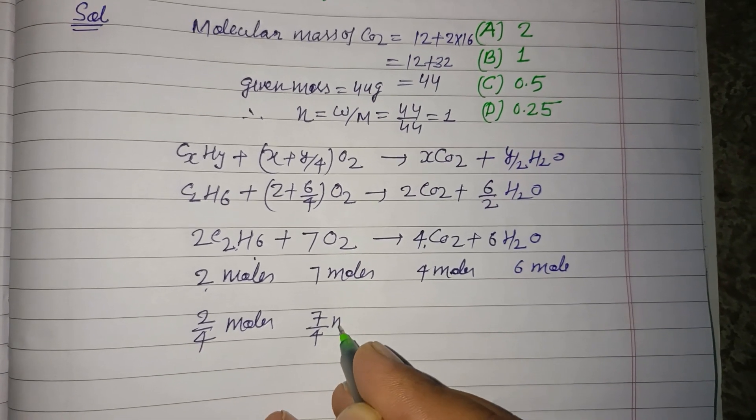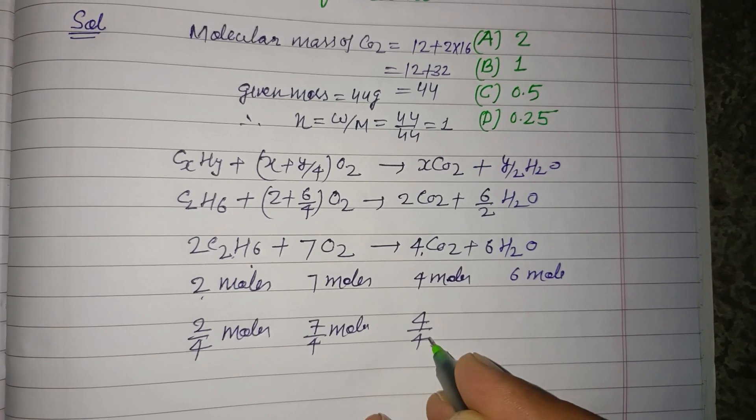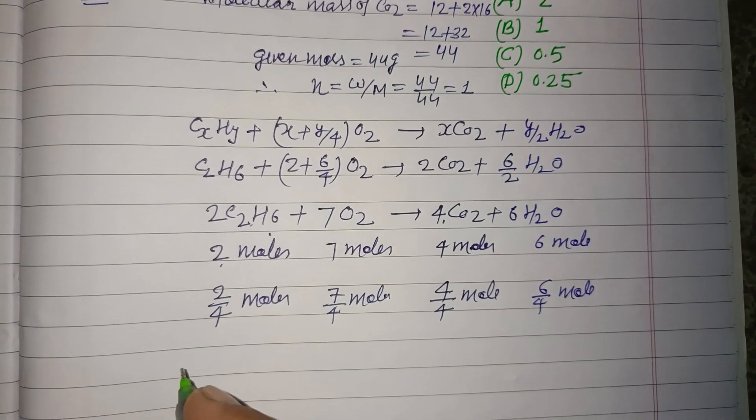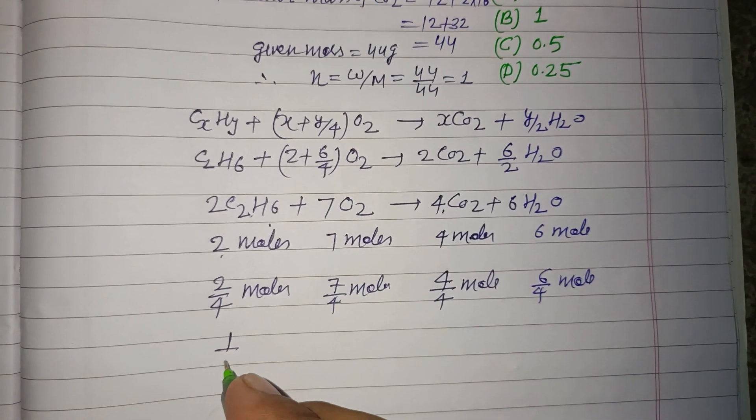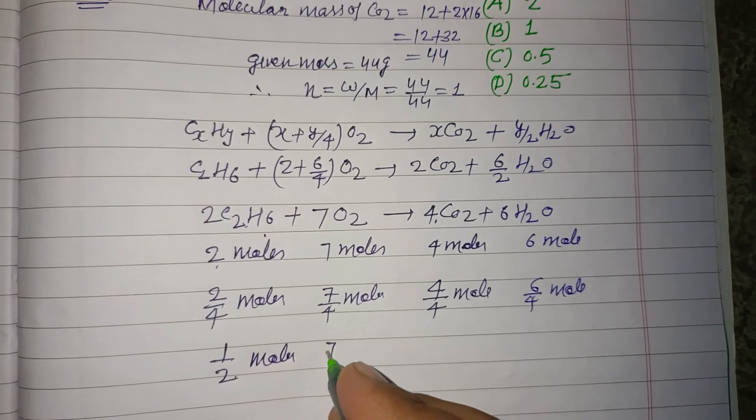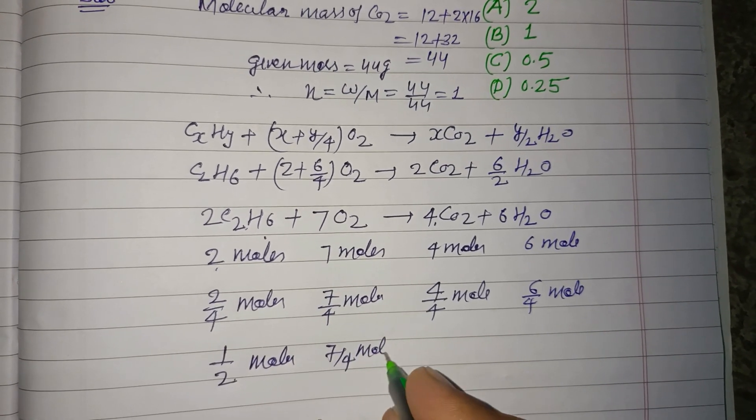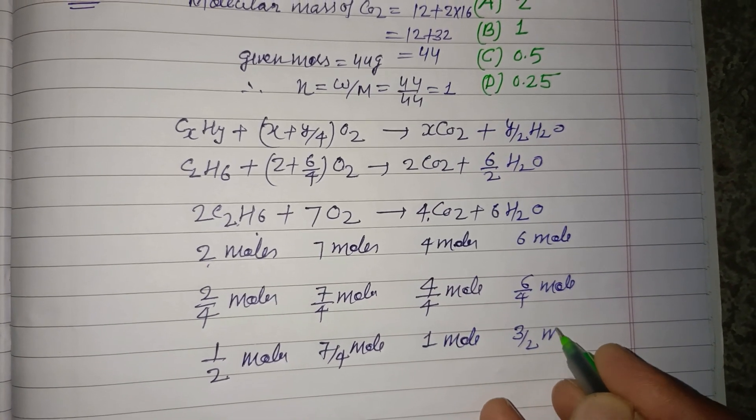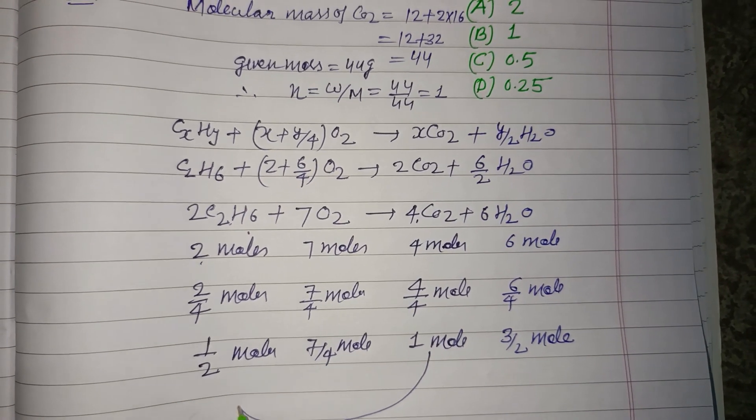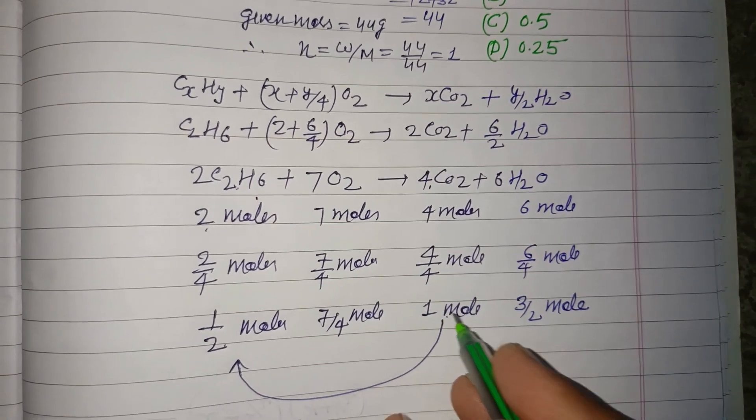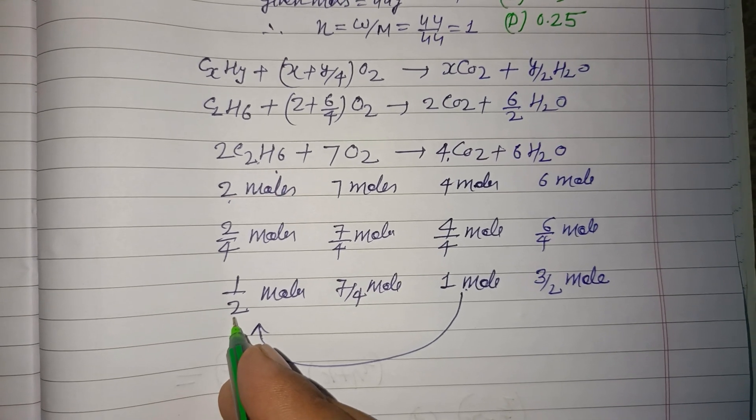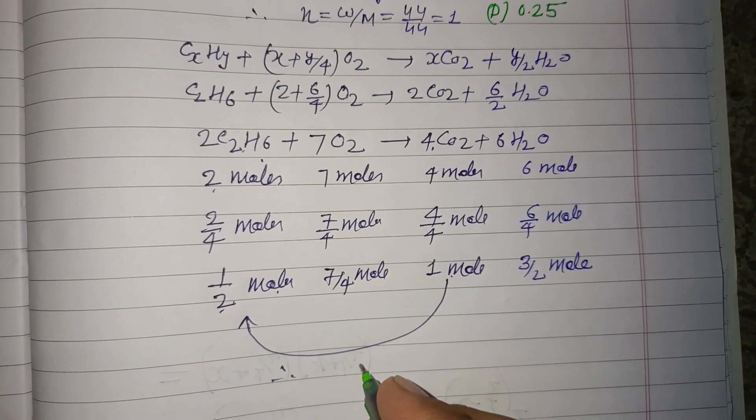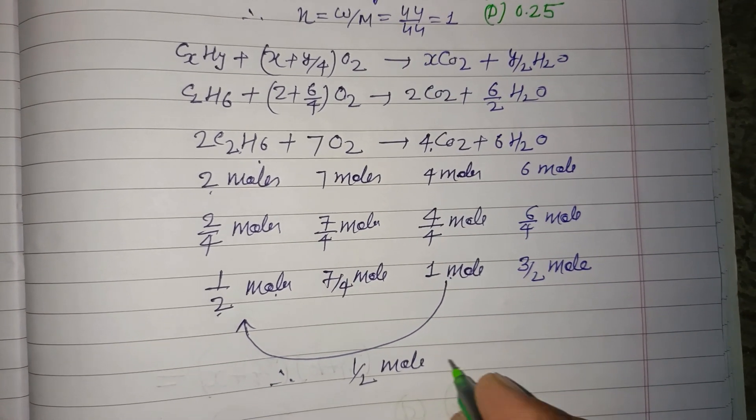7/4 moles, 4/4 moles, 6/4 moles. From here we can easily find: this is 1 mole, and this is 3/2 moles after simplification. So one mole carbon dioxide is obtained by 1/2 mole of ethane. Therefore, 1/2 mole of C2H6.